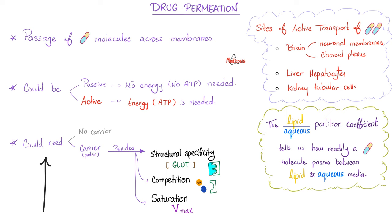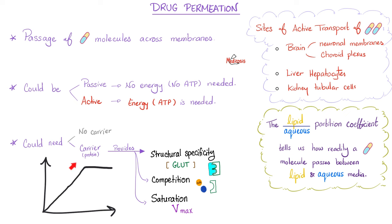If we draw a graph: in the beginning the receptors were available, so the more drug you add, the more effect you get — until you saturate all of the receptors and the effect levels off. You have reached the maximum velocity, or Vmax.